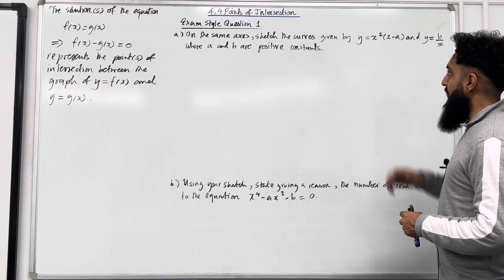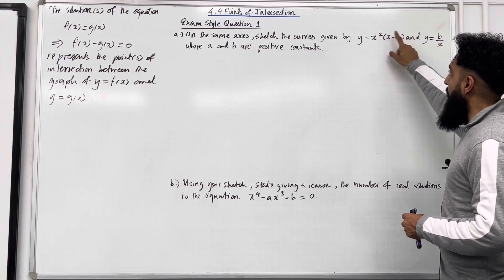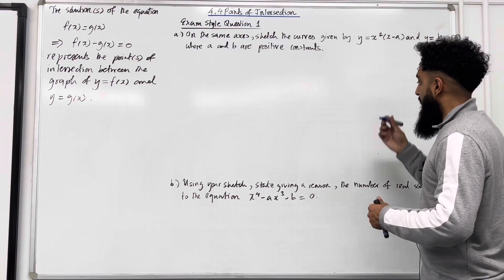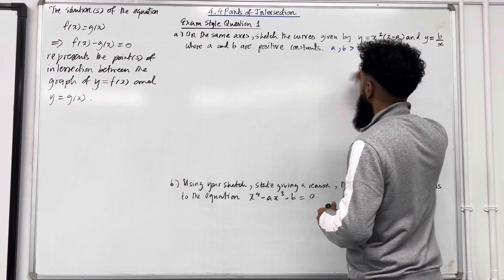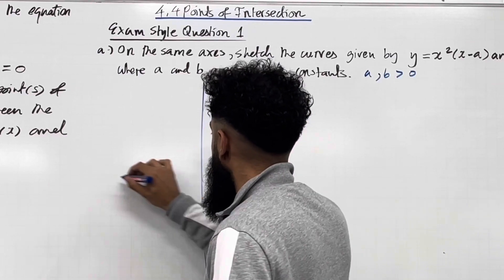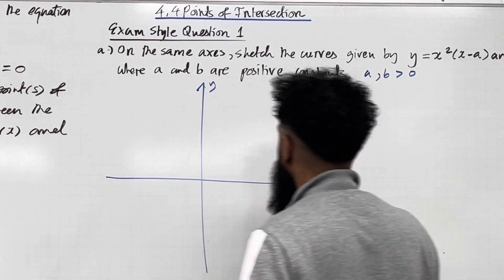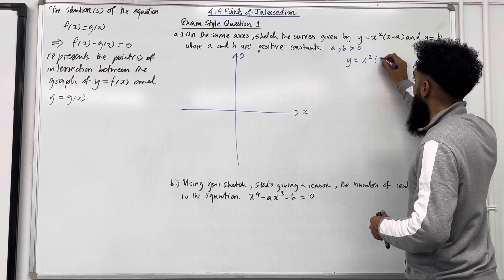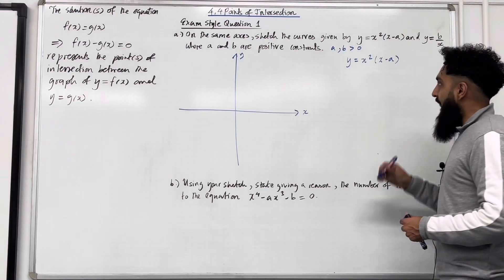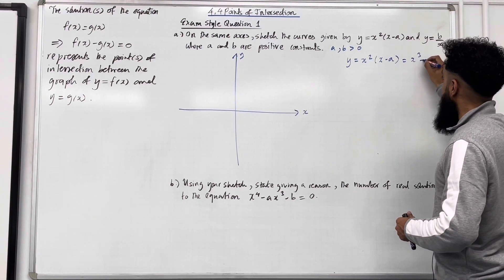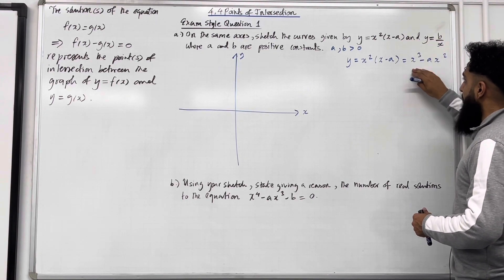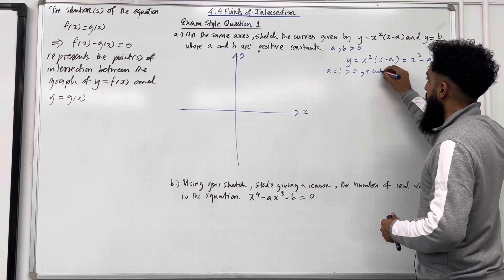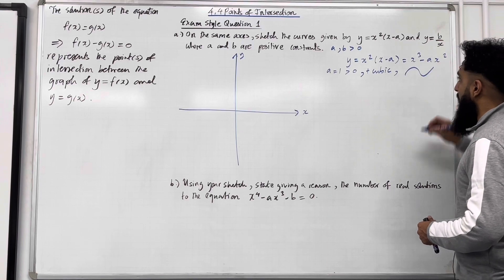Part A: on the same axes, sketch the curves given by y = x²(x − a) and y = b/x, where a and b are positive constants. Firstly, we know that a and b are greater than 0. Let's have a look at the equation y = x²(x − a). If I expand this, I get x³ − ax². The coefficient of x³, in this case, is equal to 1, which is greater than 0. So we have a positive cubic, hence the shape of the graph will look something like this.